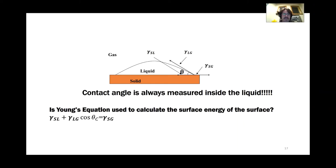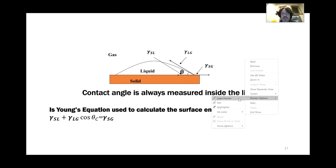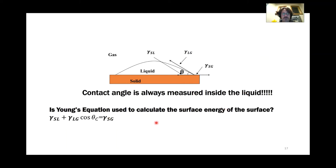Now that we've looked at the experiments, we can come back to contact angle measurement. Looking at the schematic of the solid-liquid interface: gamma SG is the solid-gas (surface energy of the solid), gamma LG is the liquid-gas energy, and gamma SL is the interfacial energy between solid and liquid. Contact angle is always measured inside the liquid.